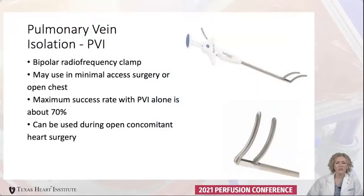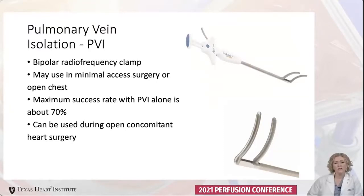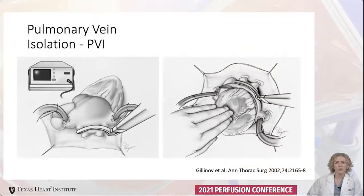Pulmonary vein isolation is done using a bipolar radiofrequency clamp. It can be used in minimal access surgery, even thoracoscopic surgery, or the open chest. The maximum success rate with just pulmonary vein isolation alone is about 70%. This can also be used during concomitant open heart surgery, like with valves or bypasses. The clamp is placed around the right and left pulmonary veins with a little cuff of left atrial tissue to achieve complete pulmonary vein isolation.